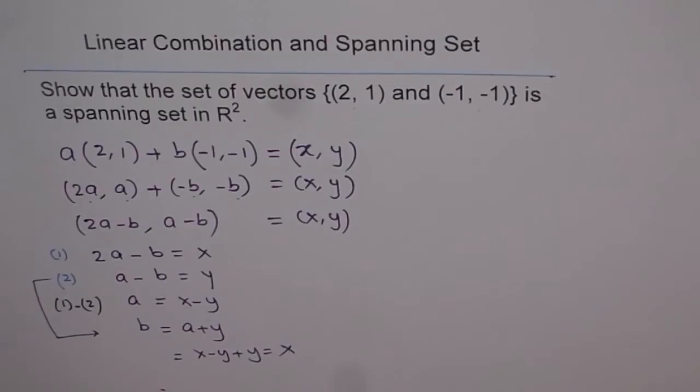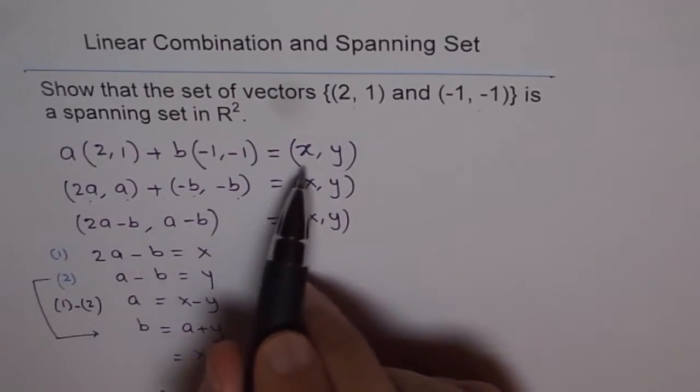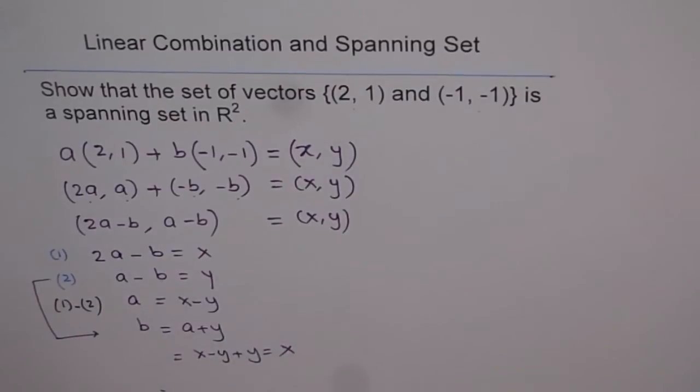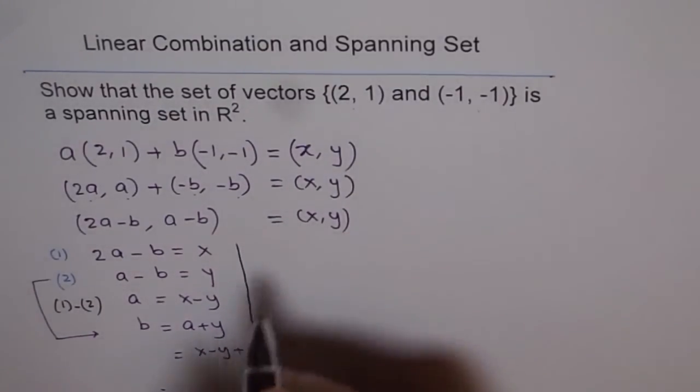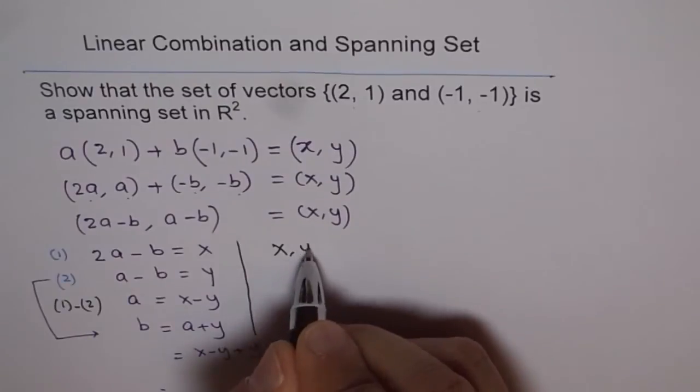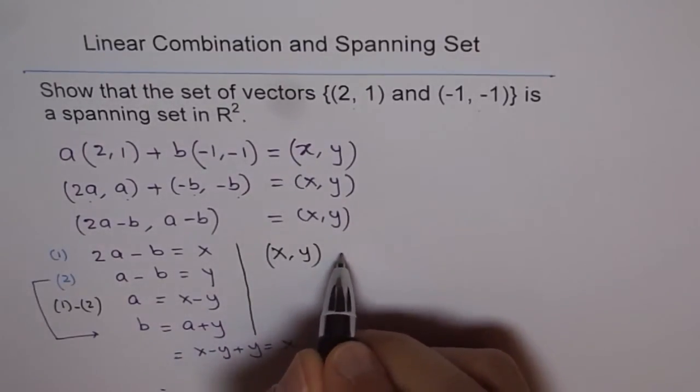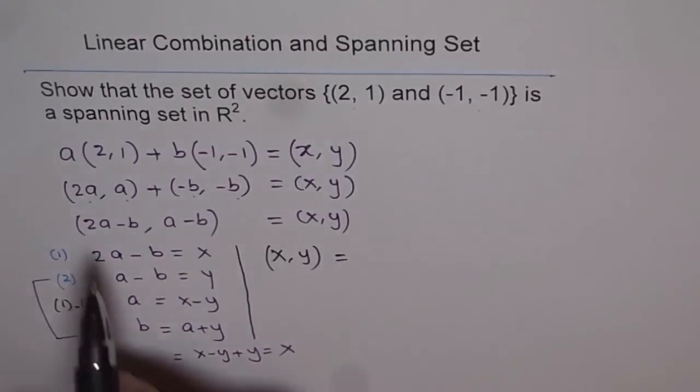And therefore, we can write (x, y) as, let me write it down here in a different thing. So what do we get from here? We get (x, y), the vector, any position vector in R² is equal to a times, and a is the value of a, which we found was x - y.